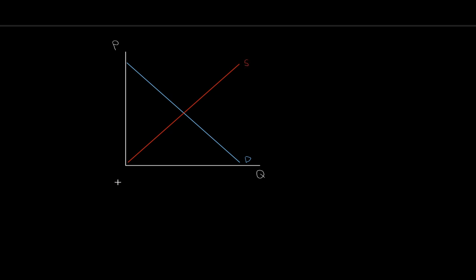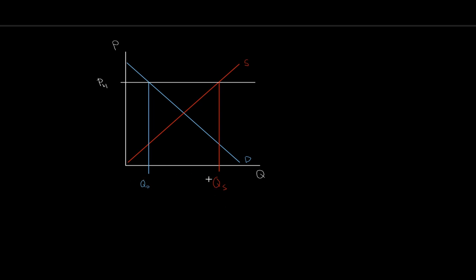Let's examine what happens at a high price. We have our upward-sloping supply and downward-sloping demand. At a high price, quantity demanded is low while the producer sees a great price and supplies a large quantity. What we notice is a difference between what producers are producing and what consumers are buying — we have excess supply between those two quantities.